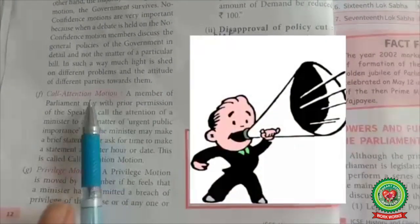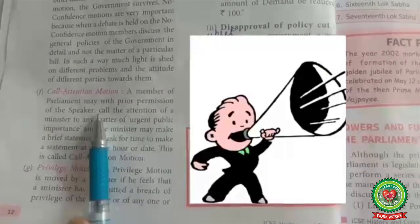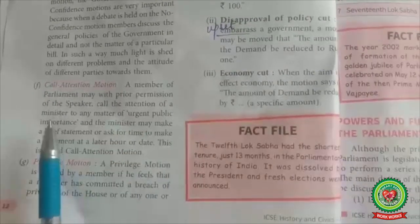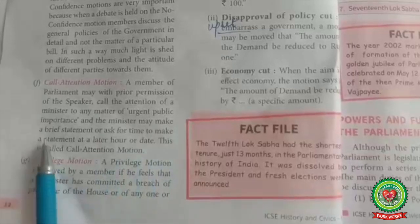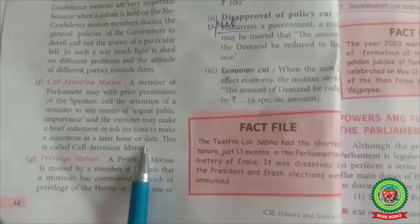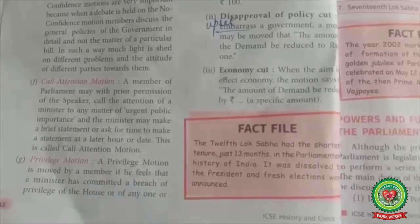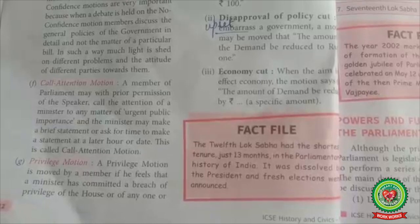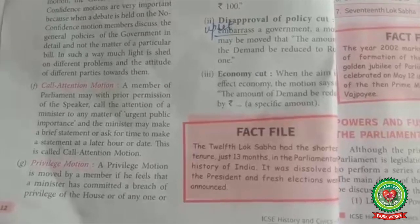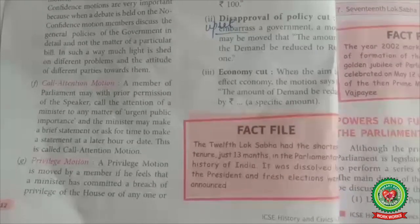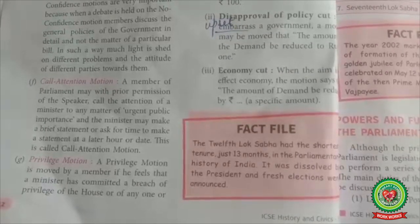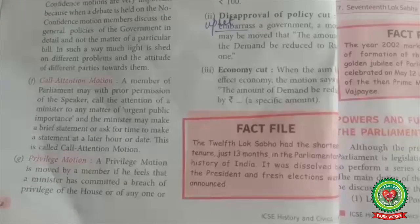6. Call Attention Motion: A member of parliament may, with prior permission of the speaker, call the attention of a minister to any matter of urgent public importance. The minister may make a brief statement or ask for time to make a statement at a later hour or date. This is called the Call Attention Motion. It is a unique Indian innovation in modern parliamentary procedure.